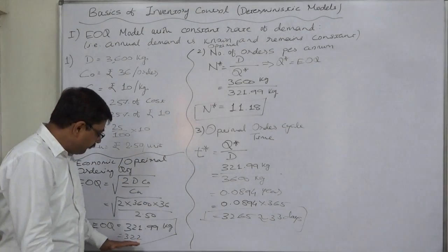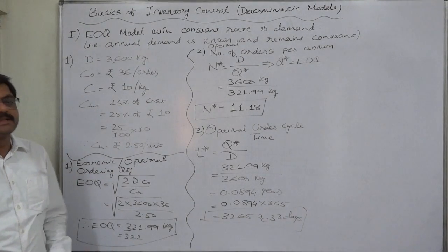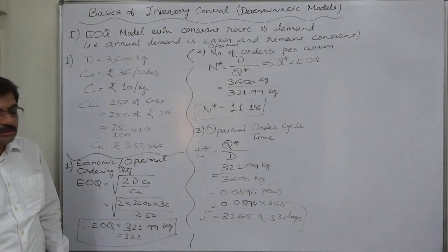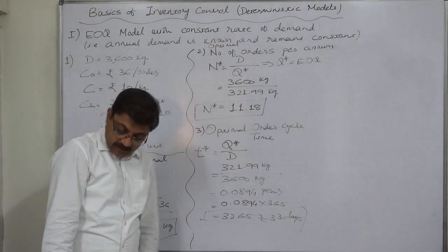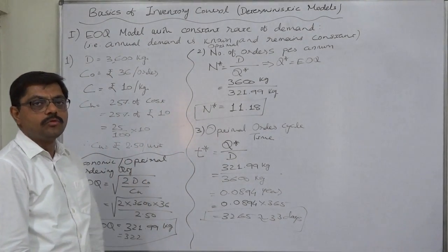The gap between two consecutive orders would be 33 days approximately if we follow the EOQ pattern or EOQ model. That means, if we place every time order of approximately 322 kg, there will be a gap of 33 days between the two consecutive orders.